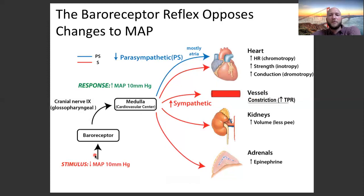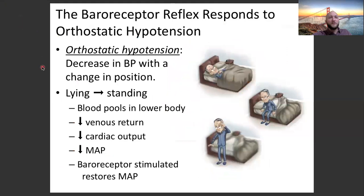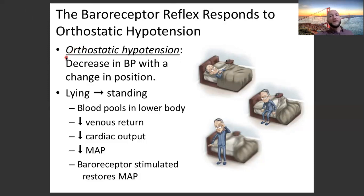Look over this a few times. Practice telling the story: given a stimulus of a decrease in MAP of 10 mmHg, explain how your body detects that and what it does to bring your body back to homeostasis. The baroreceptor reflex also responds to orthostatic hypotension. Have you ever stood up really quickly and gotten dizzy for a second or two? That's orthostatic hypotension, and that's how fast your baroreceptor responds to changes in blood pressure.